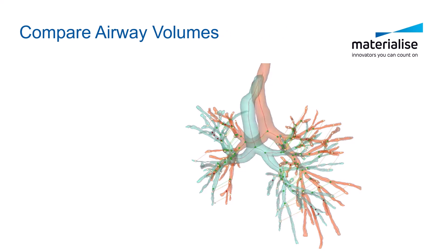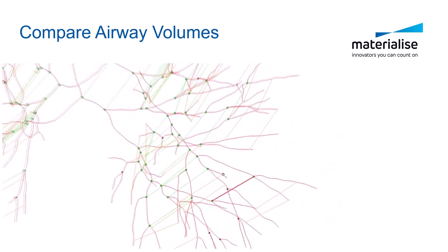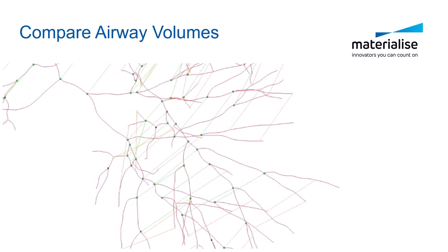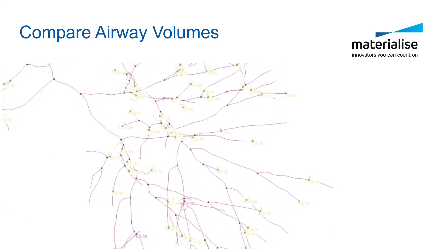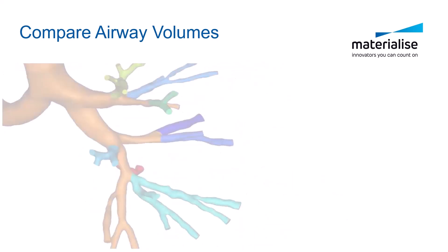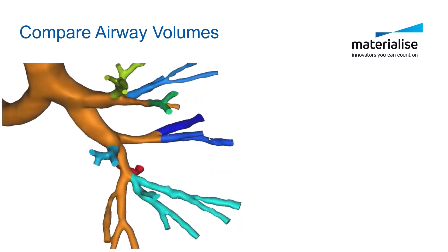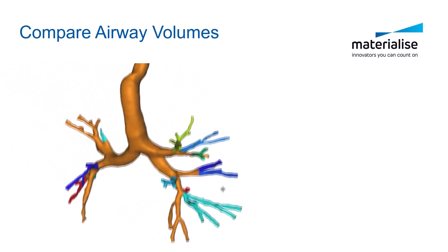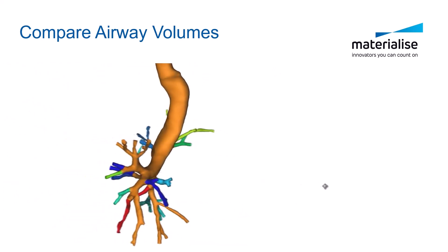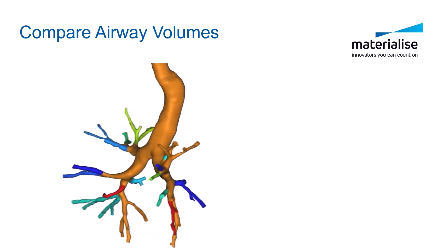Compare pre and post-op or patient 1 versus patient 2 using the airway centerline matching to compare volumes at B-level. Fine-tune matching results and make the airway topology consistent. Fine-tune the cutting planes and the comparison will show up as a heat map of the smallest and greatest differences.